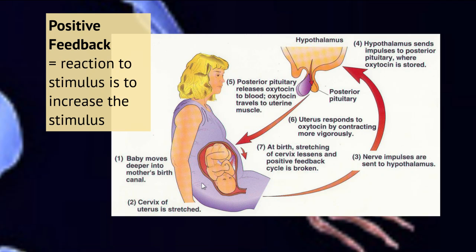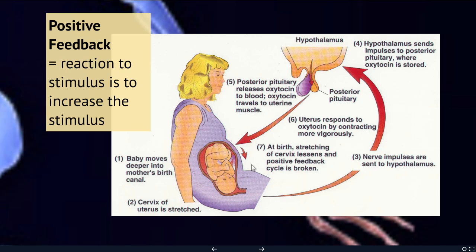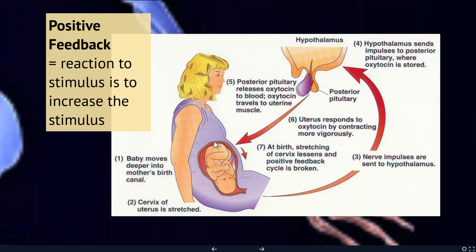Oxytocin is an interesting hormone beyond triggering birth contractions — it's also the hormone that helps you feel bonded to other people. When you finish giving birth, your body is flooded with oxytocin, and even though you're no longer having contractions, it helps you bond with that brand new baby you're snuggling.